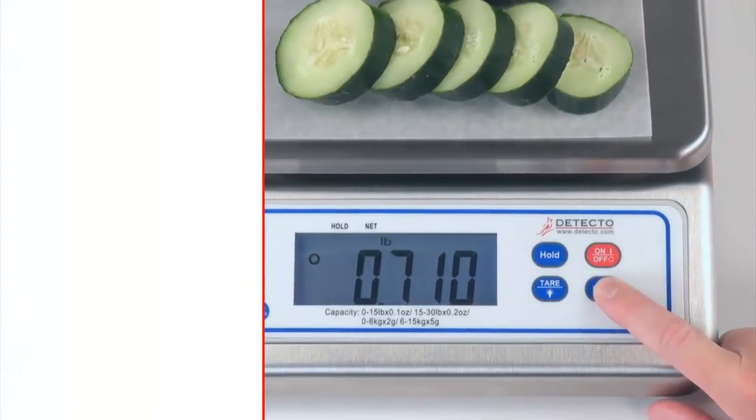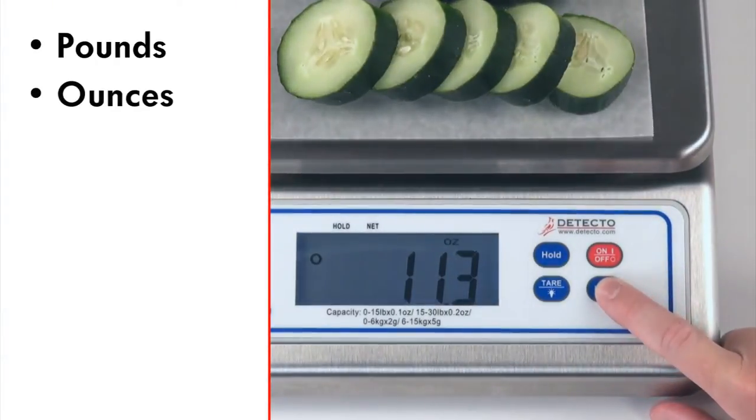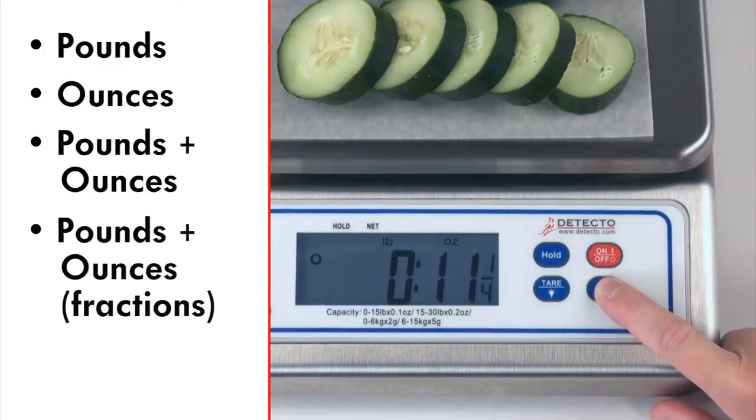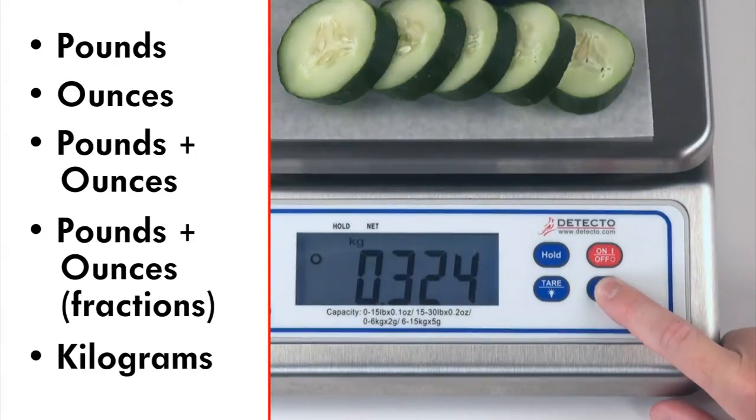The digital scale weighs in pounds, ounces, both pounds and ounces, pounds and ounces with fractional one-eighth ounce, and kilograms. These selectable units may be preset to display only those desired by the user.